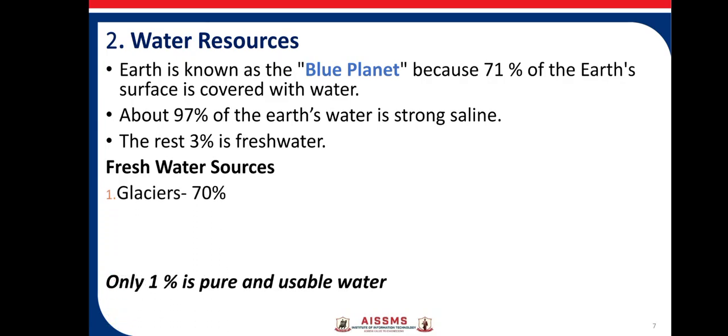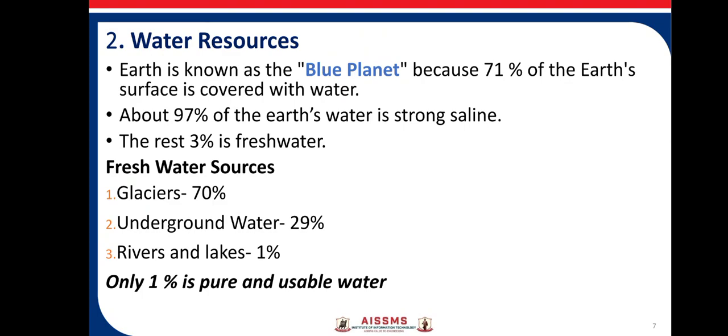Why is only 1% usable? Because out of 100% fresh water, 70% is in the form of glaciers — that is, in the form of ice — and 29% is in the form of ground water. Only 1% of water is present in rivers and lakes, which is the usable water. So water is a very precious natural resource.